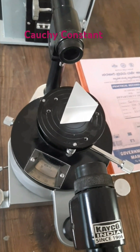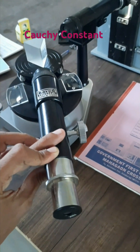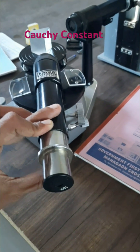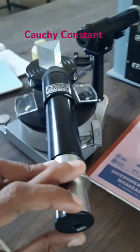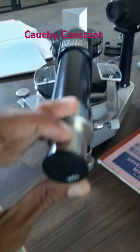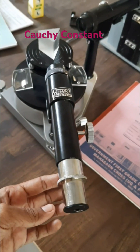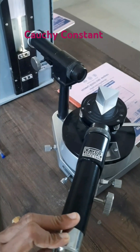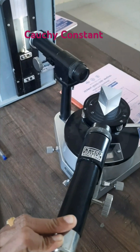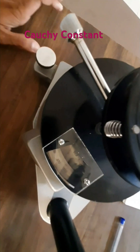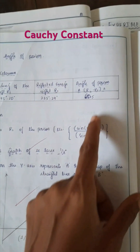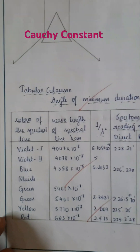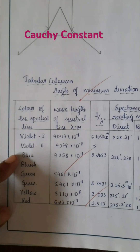The slit width must cross the crossing mark to take the readings r1 and r2 to calculate the angle. The angle of the prism is 60 degrees, and we measure the minimum deviation for different colors.